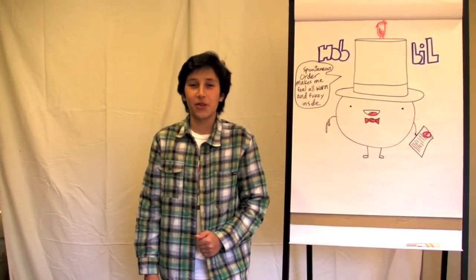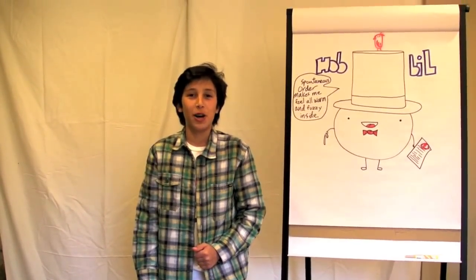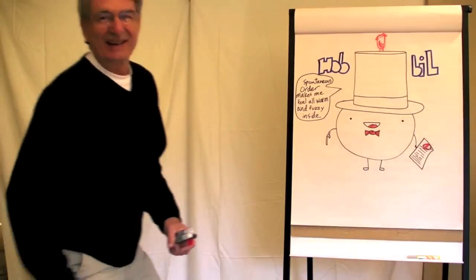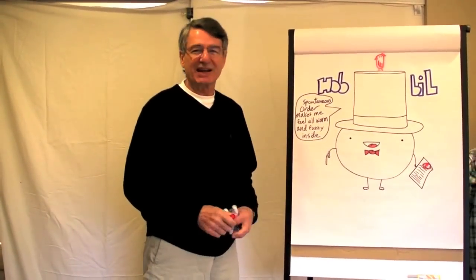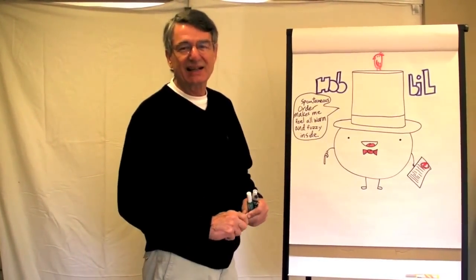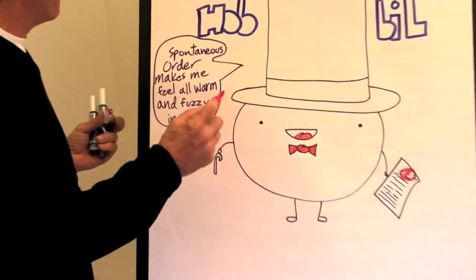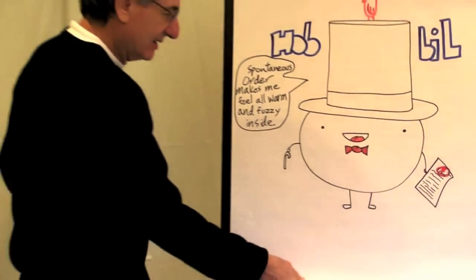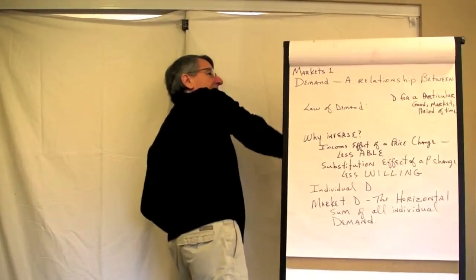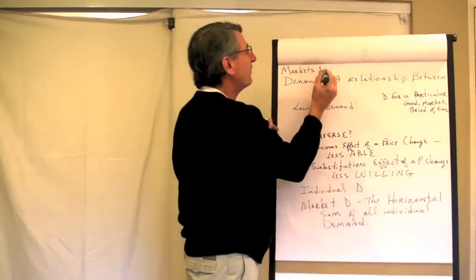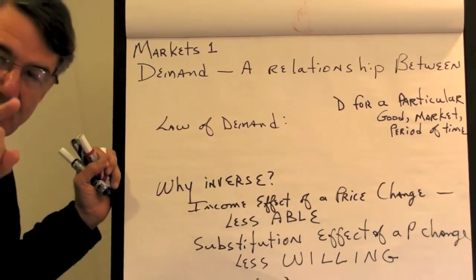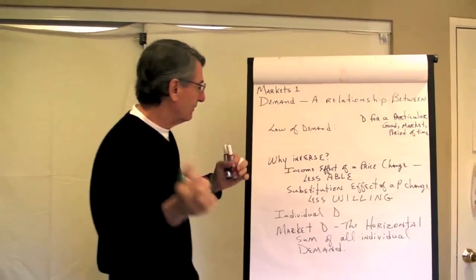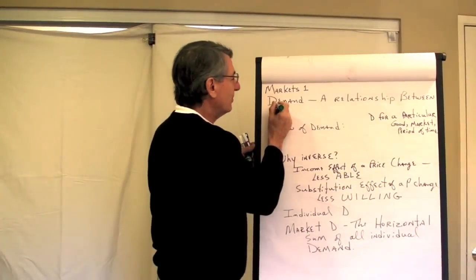Recording live from McNeil International Studios in beautiful Baja Tustin, on air with Mark McNeil. I'm going to talk fast because I've got a lot to do. This is the first of a series on markets. I'm going to do demand, I'm going to do supply, and then I'm going to put them together and talk about equilibrium in markets and how it's achieved. So first we start with demand.